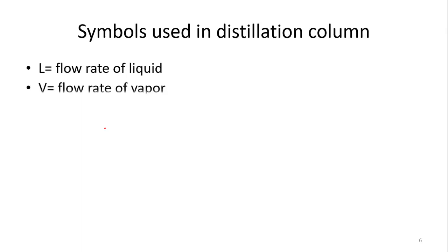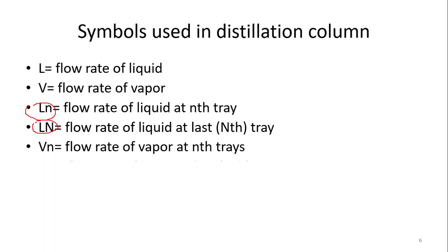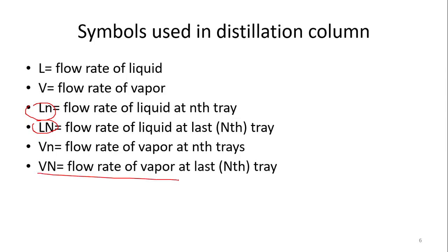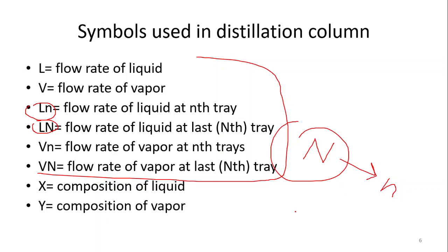Now for the symbols: L(n) means the flow rate of liquid at the nth tray; L(N) with capital N means flow rate of liquid at the last tray. Similarly, V(n) is flow rate of vapor at the nth tray and V(N) is flow rate of vapor at the last tray. X is the composition of the liquid phase and Y is the composition of the vapor phase. These are the nomenclatures we will use in our distillation column design and material balance.